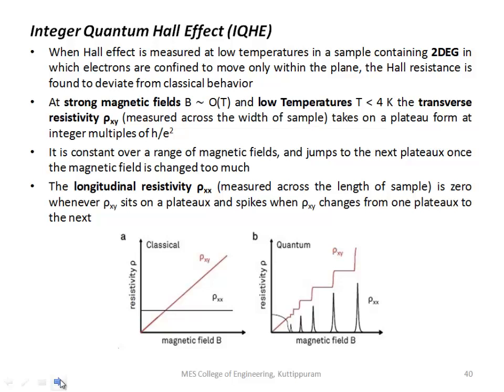When it comes into the quantum Hall effect, two types of resistivity are available. First one, the transverse resistivity which is termed as rho xy, that is it is measured across the width of the sample. Next one is the longitudinal resistivity, that is rho xx, which is measured across the length of the sample.